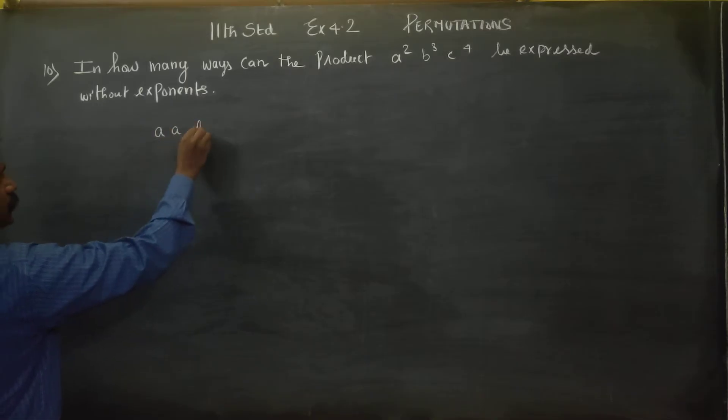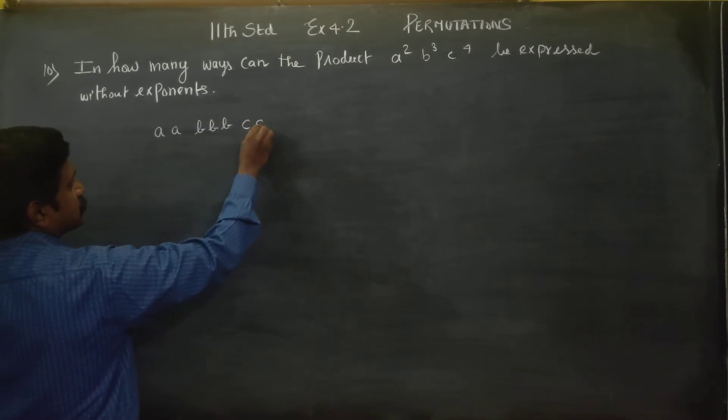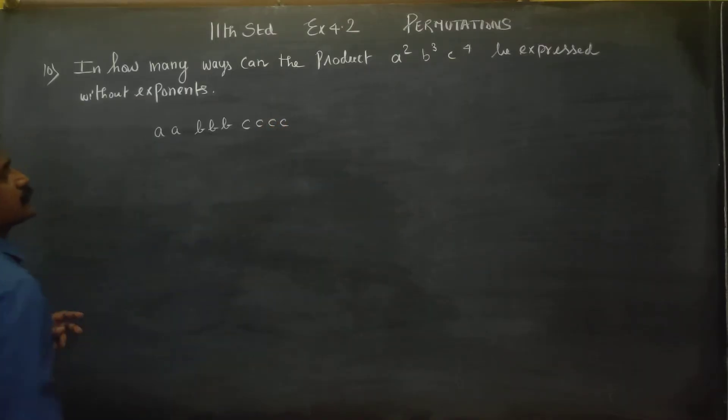a a b b b c c c c. This is without exponents. When we take it with exponents it's 1, 2, 3, 4, 6, 7, 8. We need to find the number of formulations or number of ways.